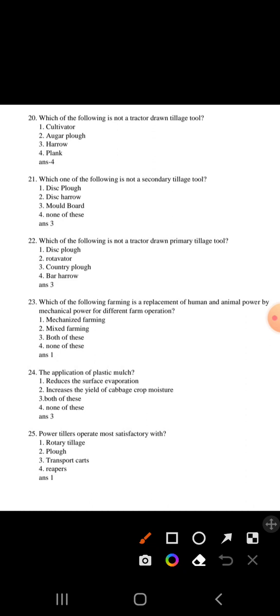Question 22: Which of the following is not a tractor drawn parameter tillage tool? Third is correct, country plow. Question 23: Which of the following farming is a replacement of human and animal power by mechanical power for different farm operations? Mechanized farming, so first option will be correct.